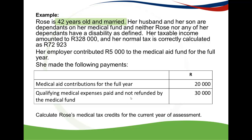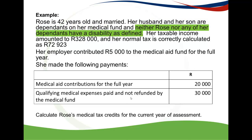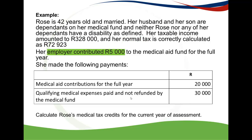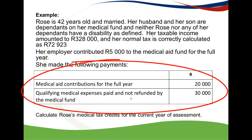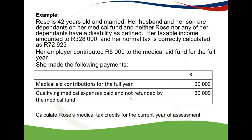Let's do an example. Rose is 42 years old — younger than 65 — and she's married. Her husband and her son are dependent on her medical fund, and neither Rose nor any of her dependents have a disability as defined. Her taxable income is $328,000 and her normal tax is correctly calculated as $7,293. Her employer contributed $5,000 to the medical aid fund for the full year. She also made medical aid contributions of $20,000, and her qualifying medical expenses paid and not refunded by the medical aid fund total $30,000.